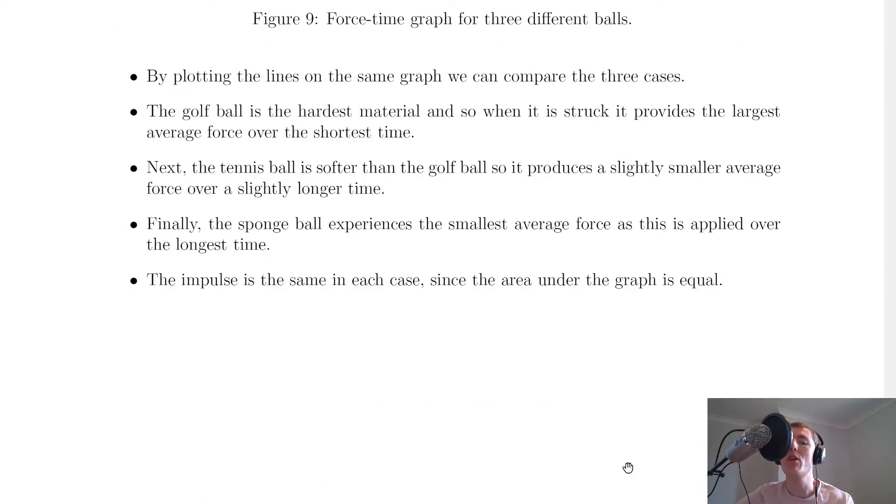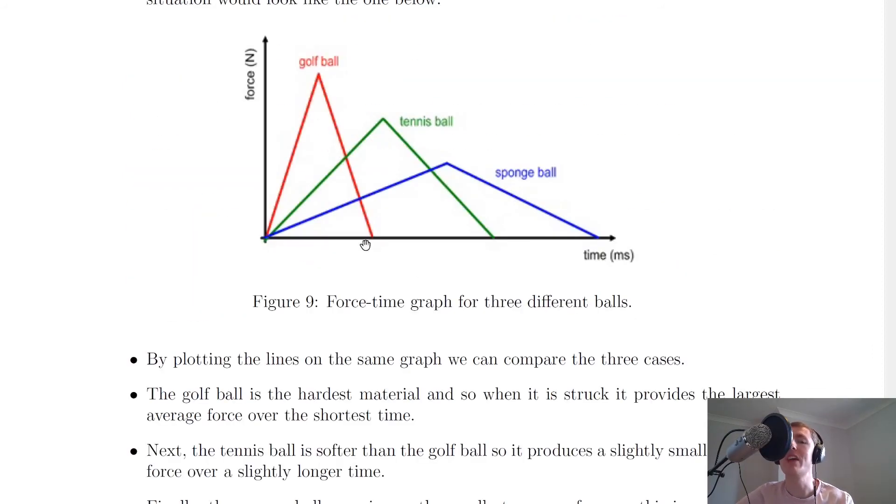In this example the impulse is the same in each case since the area under the graph is equal. If we were to calculate the area under the graph for the golf ball, for the tennis ball, and the sponge ball, then we would find that we get the same answer, which means that the impulse in each case is going to be the same.